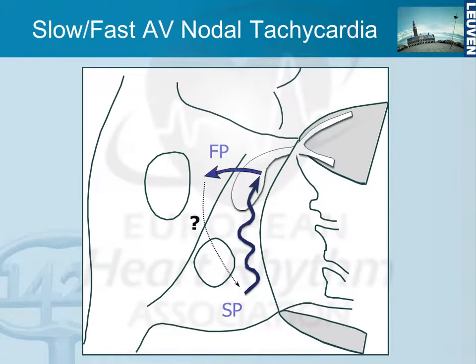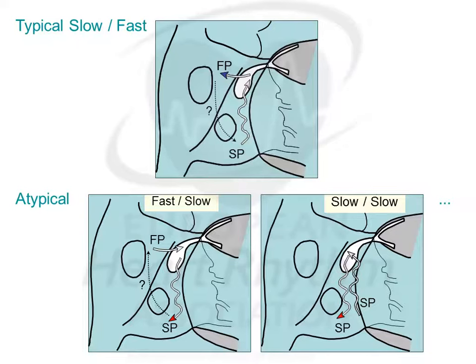Once we have one-to-one conduction down the slow pathway and back over the fast pathway, the reentrant loop closes and we have AV nodal reentrant tachycardia — the typical form. We call this slow-fast AV nodal reentrant tachycardia. In this case, atrial activation is appearing in the anterior superior septum because it's coming back over the fast pathway.